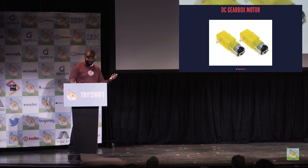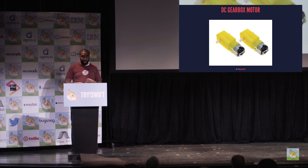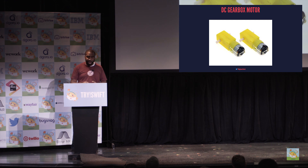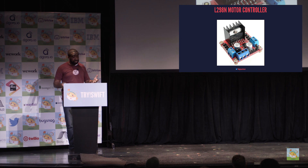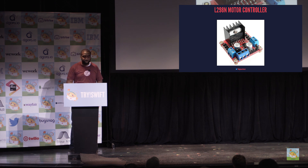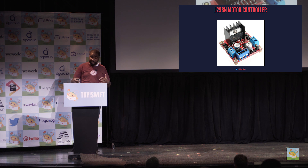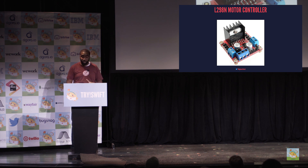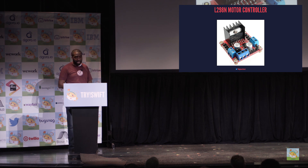You also have the DC gearbox motor, also known as the TT motor. This is a motor with a gear ratio of 1 to 48 and comes with two 200-millimeter wires perfect for plugging into a breadboard or terminal blocks. DC motors are probably one of the most common components used alongside the Raspberry Pi because of the multiple use cases for things like robotics. However, DC motors cannot be driven by a Raspberry Pi alone and require an additional motor driver. For my project, I use the L298N motor controller.